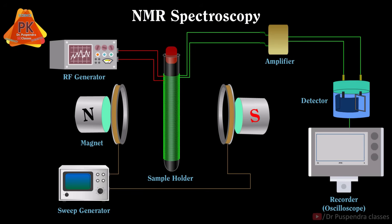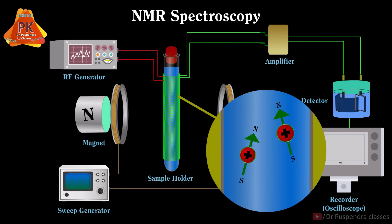Now coming to the working of this NMR instrument. First we will put the sample in the sample holder and sample must be present in the form of solution. If we are talking about 1H NMR or proton NMR, then in that condition sample must contain protons or theta protons.